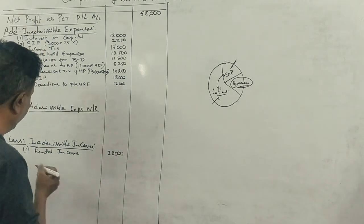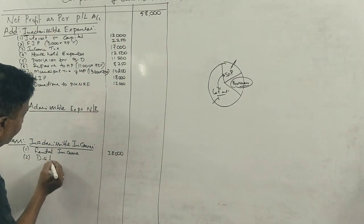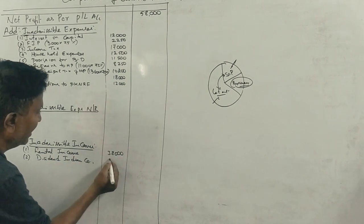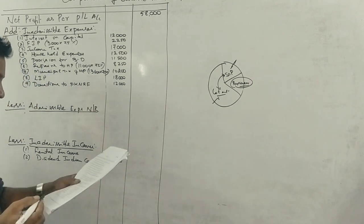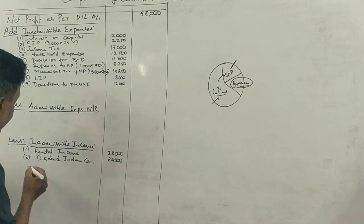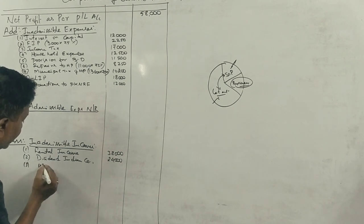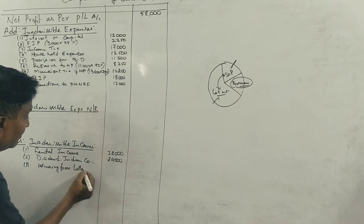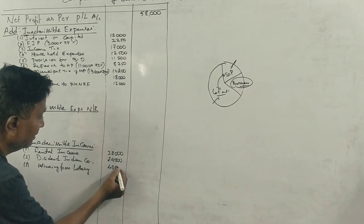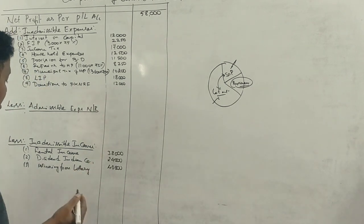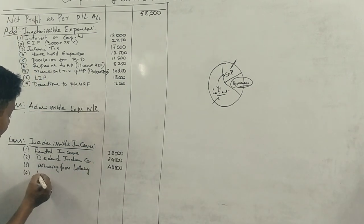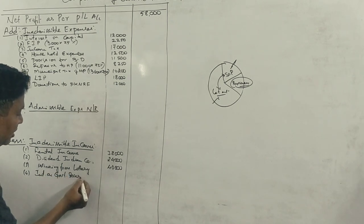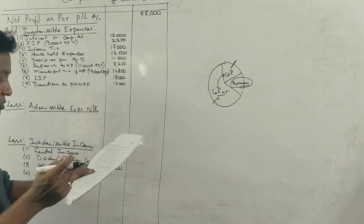Dividend from Indian company is Rs. 24,000 — this is inadmissible under business income. Winning from lottery is Rs. 40,000 — this is income from other sources. Interest on government securities is Rs. 50,000 — this is also income from other sources, not business income.